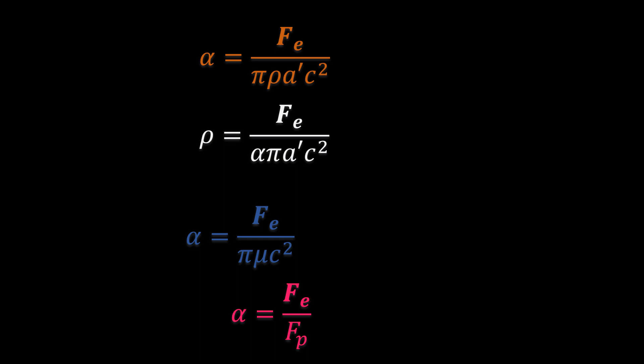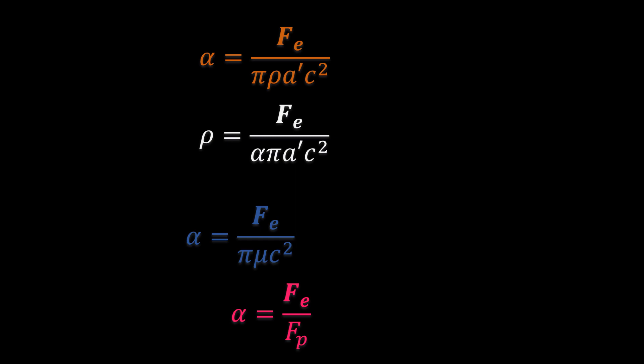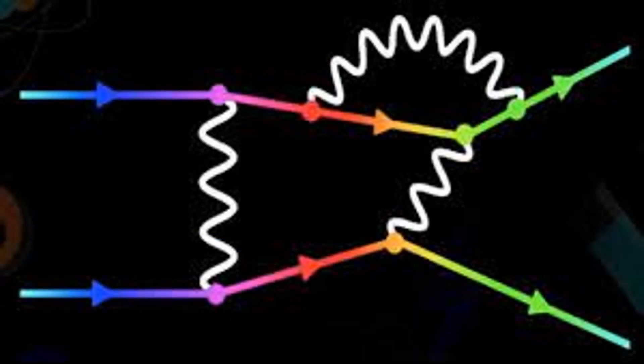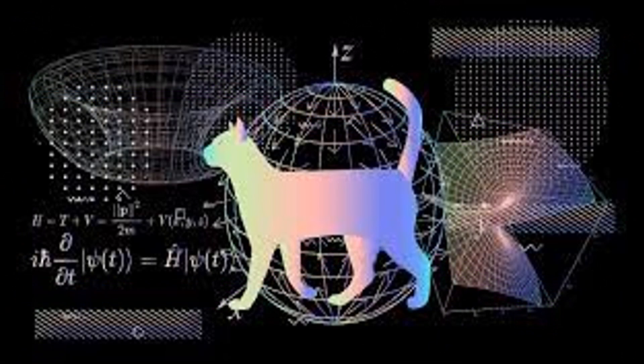This allows us to define the fine structure constant as the constant that tells us how strongly a photon will interact with an electron. This is how it is defined in quantum electrodynamics. So we don't need all the fancy math and theories of quantum mechanics to know this. My model works just fine in predicting or defining it, and it is easier and does not violate common sense, unlike quantum mechanics.